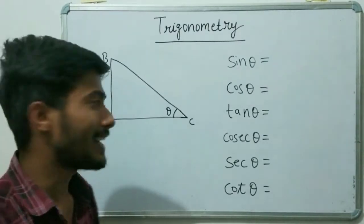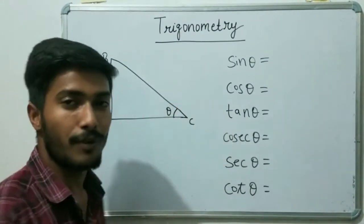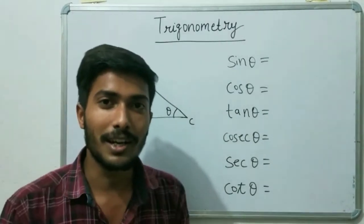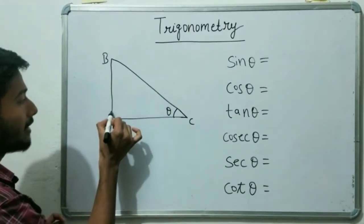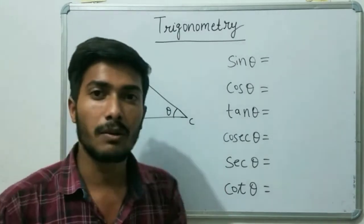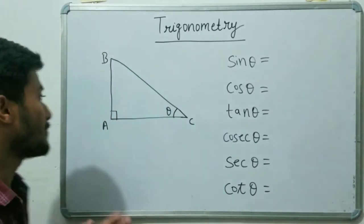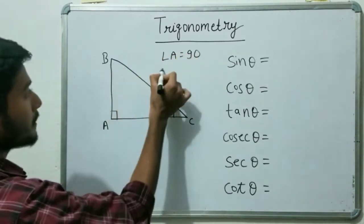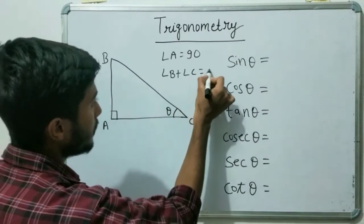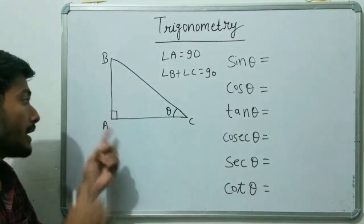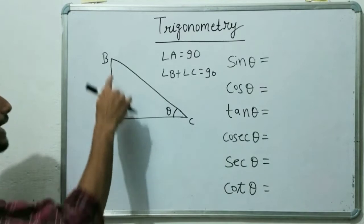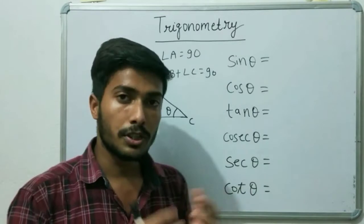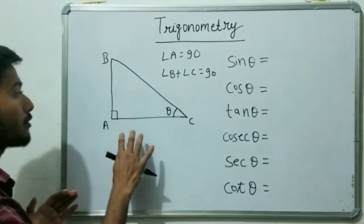Let's start our topic. First we will understand what a right angle triangle is, and then we will discuss all the trigonometric functions. A triangle is said to be a right angle triangle if it has one angle of 90 degrees, and the sum of the other two angles is also 90 degrees. So angle A is 90 degrees, and angle B plus angle C equals 90 degrees as well.